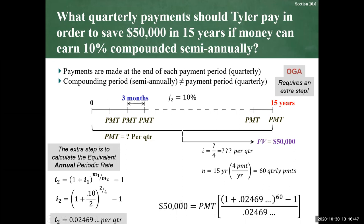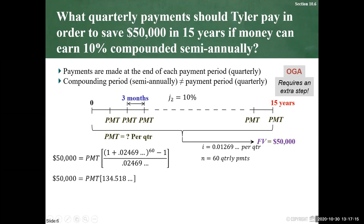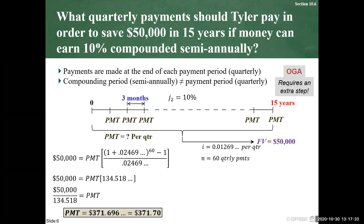We substitute all values into the future value of an ordinary annuity formula. The future value of $50,000 equals our unknown payment times the annuity factor using the quarterly rate of 0.024693... and 60 quarterly payments. Calculating the bracket terms gives us 134,518... Isolating for the payment, we divide each side by 134.518, and our final payment rounded to two decimal places is $371.70.